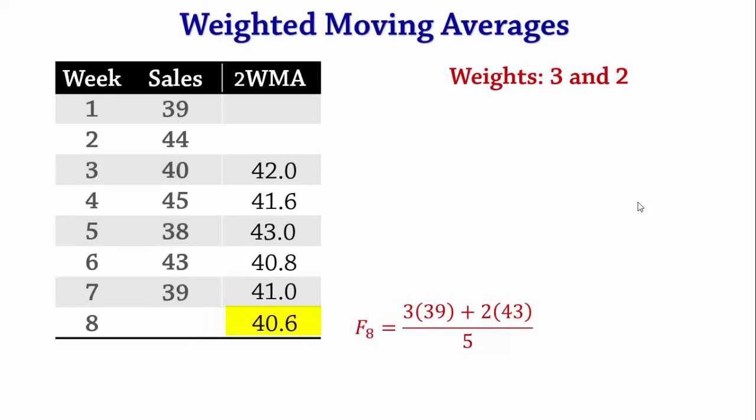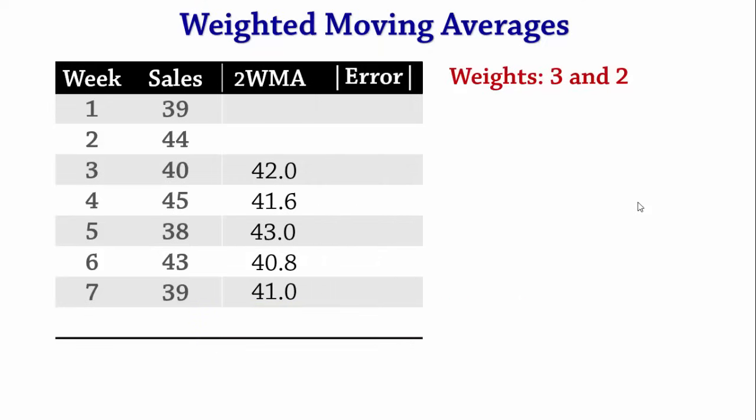Next, we calculate the Mean Absolute Deviation. The absolute forecast error for week 3 is the absolute value of 40 minus 42, which is 2. For week 4, it is 3.4. For week 5, it is 5. For week 6, it is 2.2. And for week 7, it is 2. On averaging these 5 values, we obtain a Mean Absolute Deviation of 2.92.